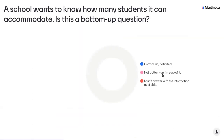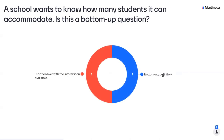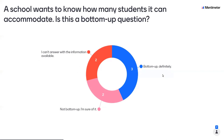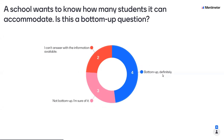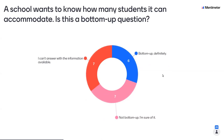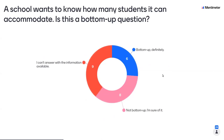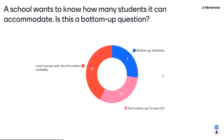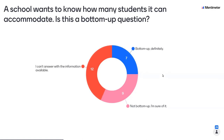So here's another question. A school wants to know how many students it can accommodate. Is this a bottom-up question? Now maybe you know a bit more about the difference between top-down and bottom-up. Again, we get people saying they don't have enough information, and you're absolutely right, because we don't know what information they're using to assess this problem — maybe the purpose: are they trying to cram in as many students as possible, or trying to design the building layout? This time we see a much more even split between bottom-up definitely and not bottom-up.